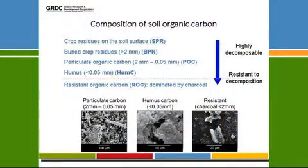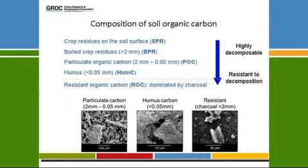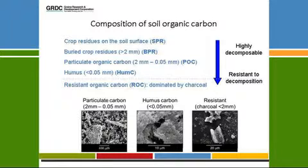First of all, we have to think about what soil carbon is. If you look at a paddock, what forms of carbon do you see? The first is crop residues on the soil surface. We also have big pieces of crop residues buried within the soil matrix. As we decrease in size, you get smaller bits and pieces of plant materials, and smaller again you're really looking at organic molecules stuck onto mineral particles. The last form we look at is called resistant carbon, which in an Australian context tends to be dominated by charcoal.